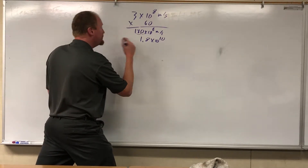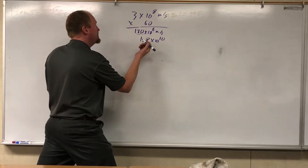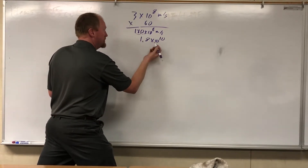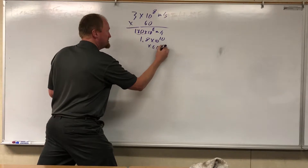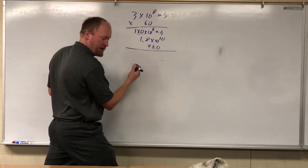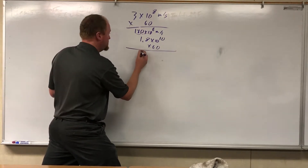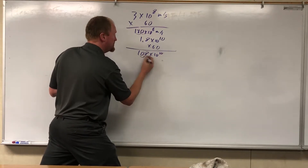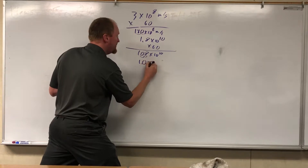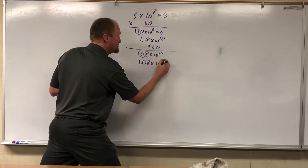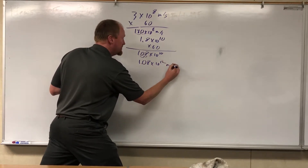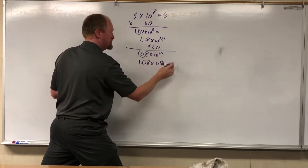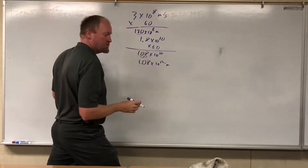So let's go a little bit further — a light hour. In order to do that, multiply by 60 again, since there are 60 minutes in an hour. And I get 108 times 10 to the 10th, or moving the decimal point over, 1.08 times 10 to the 12th meters. That is a light hour.